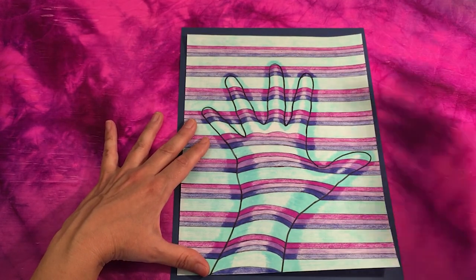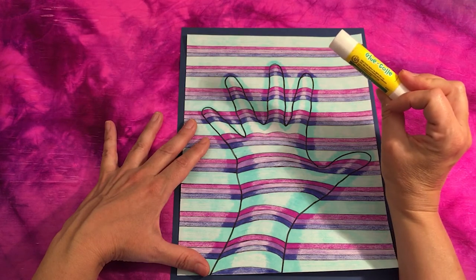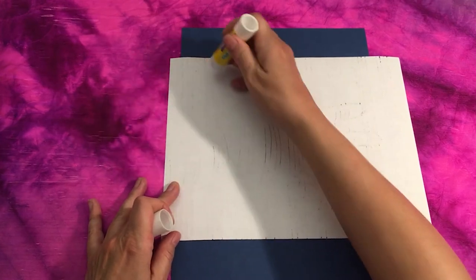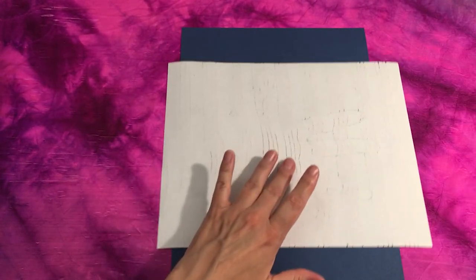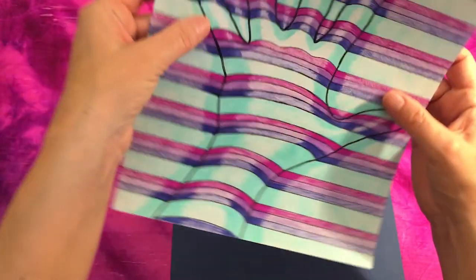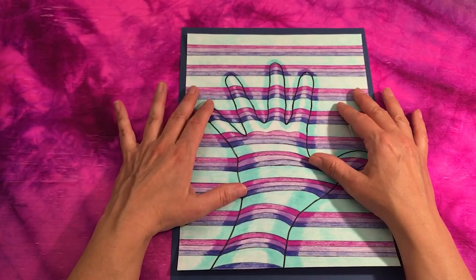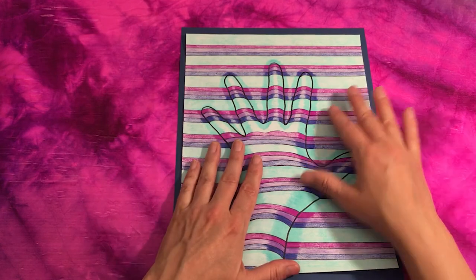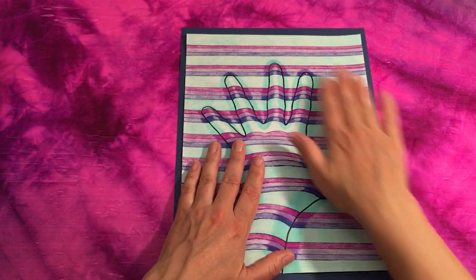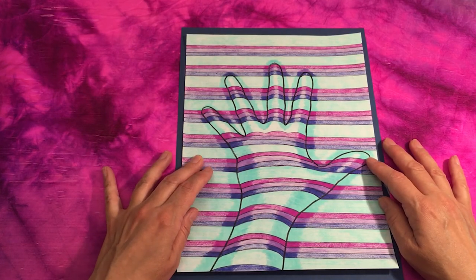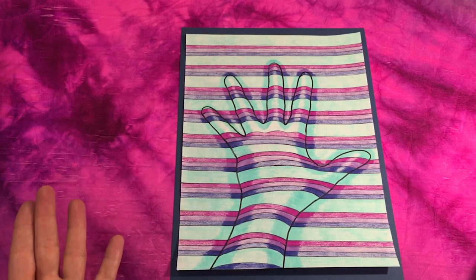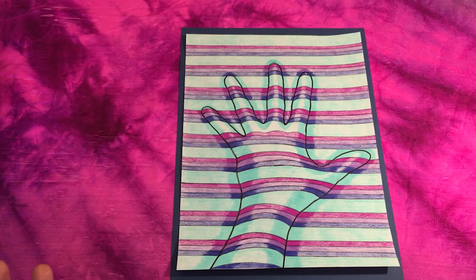So what I would do then is I would take my glue stick. I would turn my artwork over. I would put some glue on the back of my artwork. And then I would gently turn it over. And I would carefully center it on my sheet of construction paper. And then I would press down with my hands so that it would stick nicely to the construction paper underneath. And voila! Our three-dimensional hand is complete.